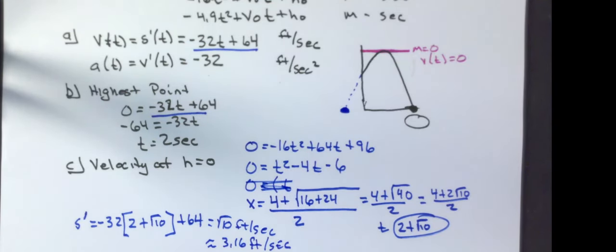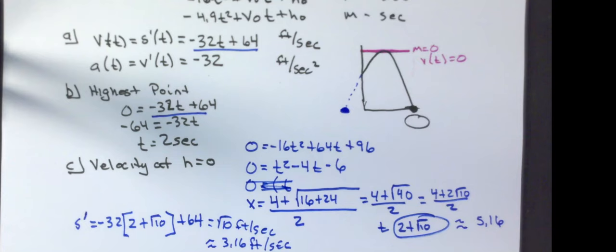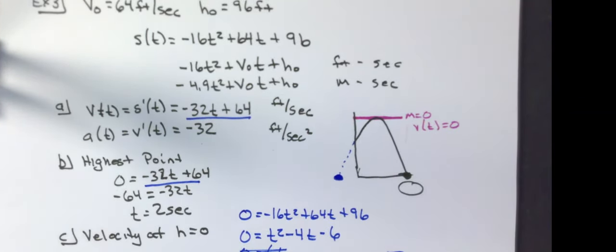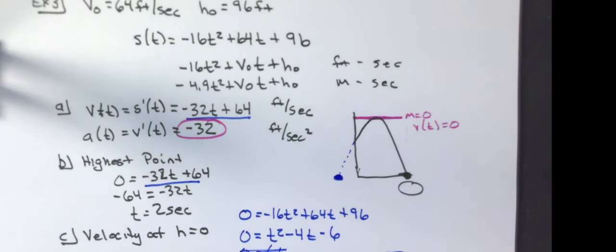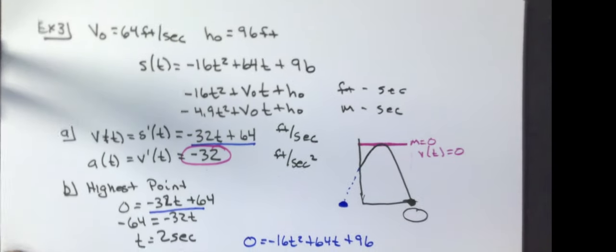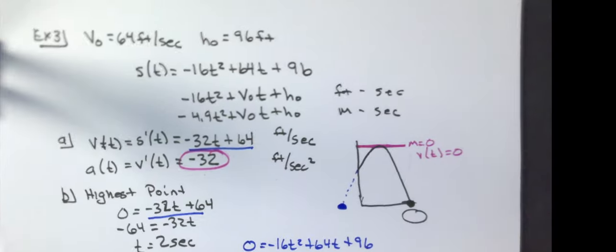The time is approximately 5.16 seconds. Anytime you're doing that vertical motion model, your acceleration is constant — no matter from the time you started throwing that thing up in the air, its acceleration was due to gravity, always at negative 32 feet per second squared. So that's dealing with the derivative as the rate of change of position.